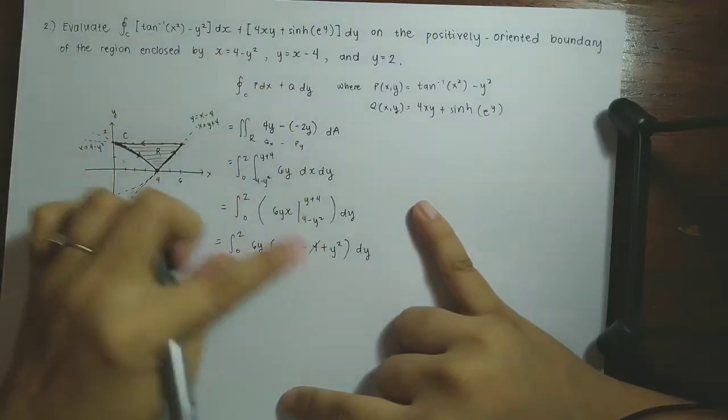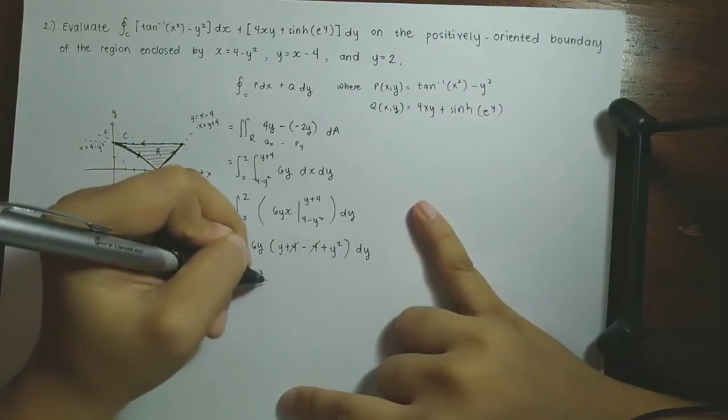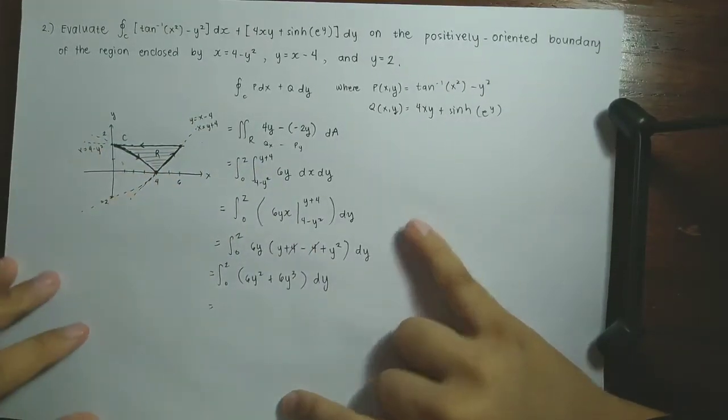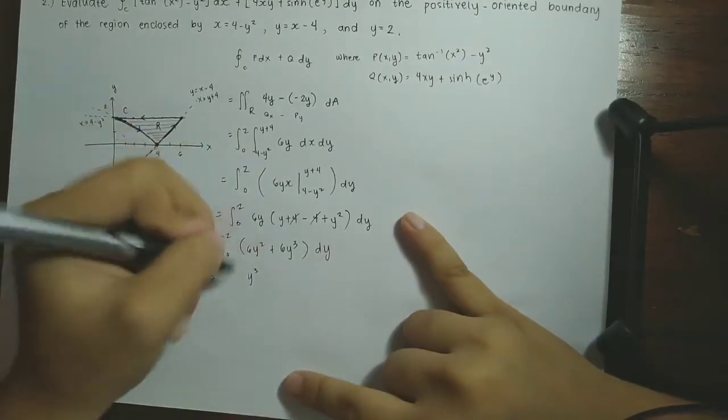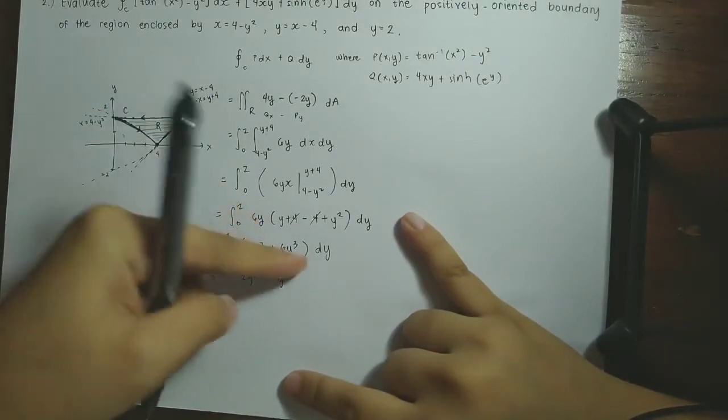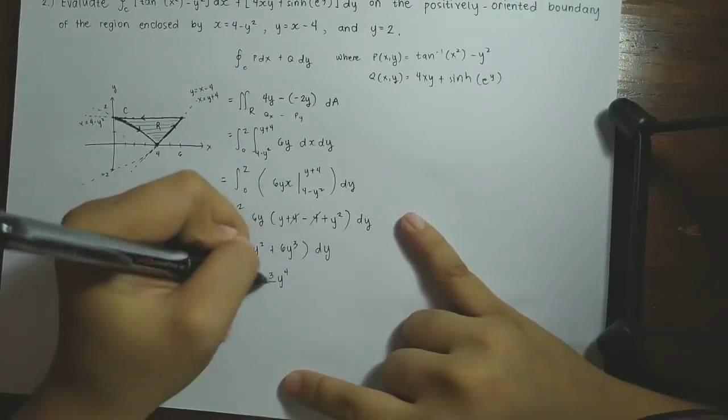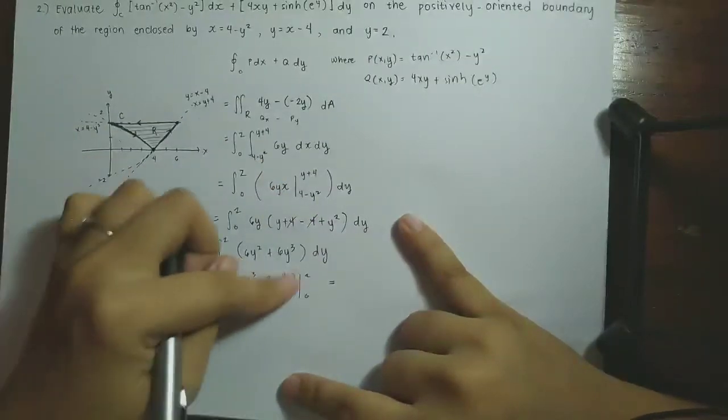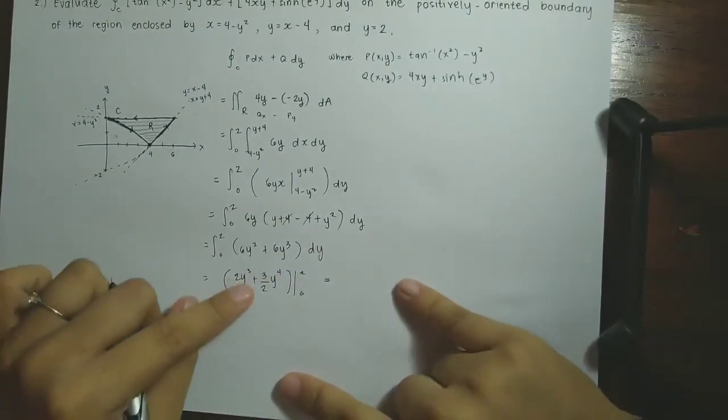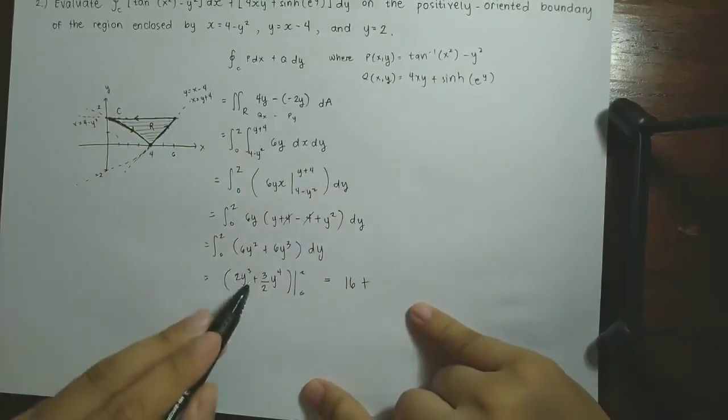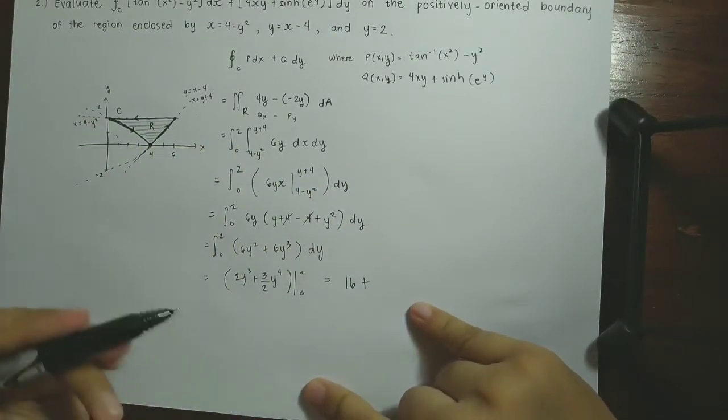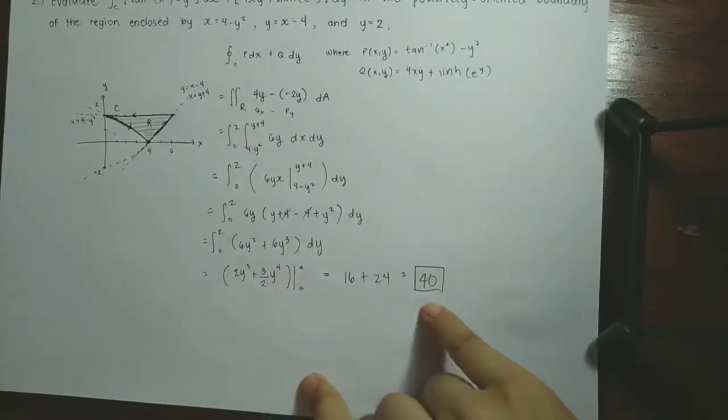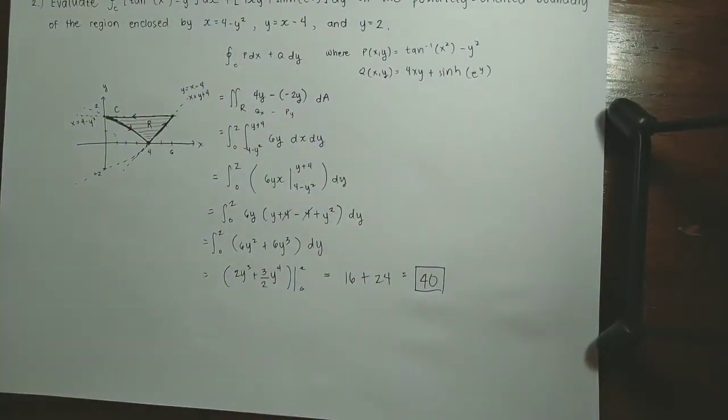The 4 cancels. Distribute, this will be 6y squared plus 6y cubed. Now integrate with respect to y. This becomes y cubed over 3, so this will be 2. This becomes y to the 4 over 4, so plus 3 over 2. Evaluate at 0 to 2. When 0, it's just 0. 2 times 2 cubed is 16. Plus 2 to the 4, one 2 cancels, so 2 cubed, 8 times 3 is 24. Plus 16, 40.